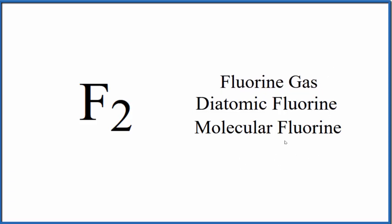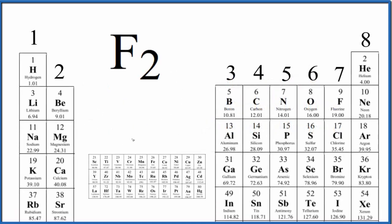So to write the Lewis structure, first we need to count up the valence electrons for F2. As we look at the periodic table here organized by valence electrons, group one has one valence electron, group two has two. Fluorine is in group 17, sometimes called 7A. It has seven valence electrons.